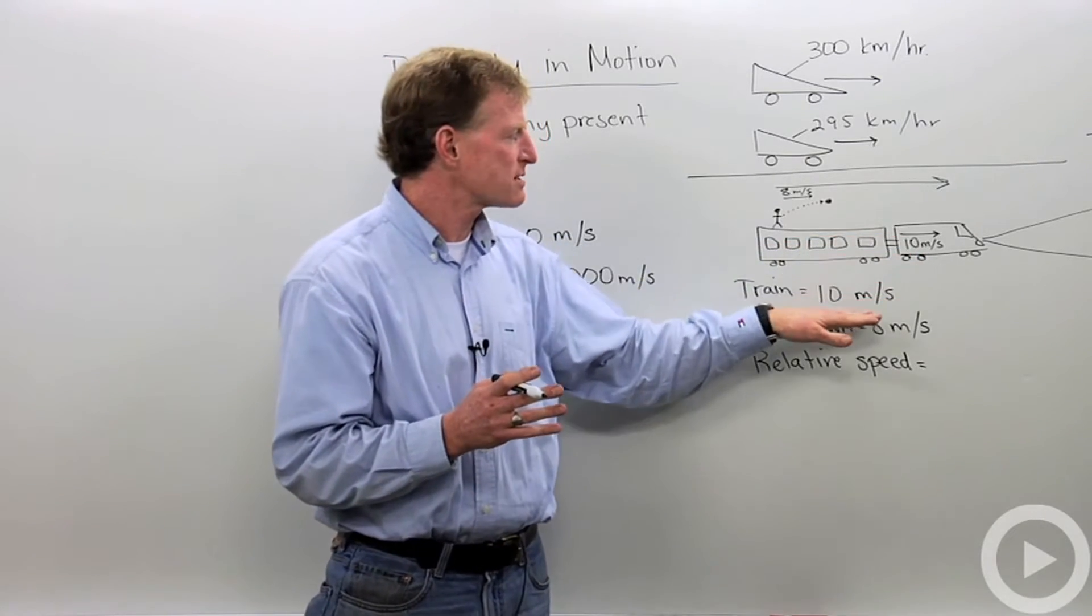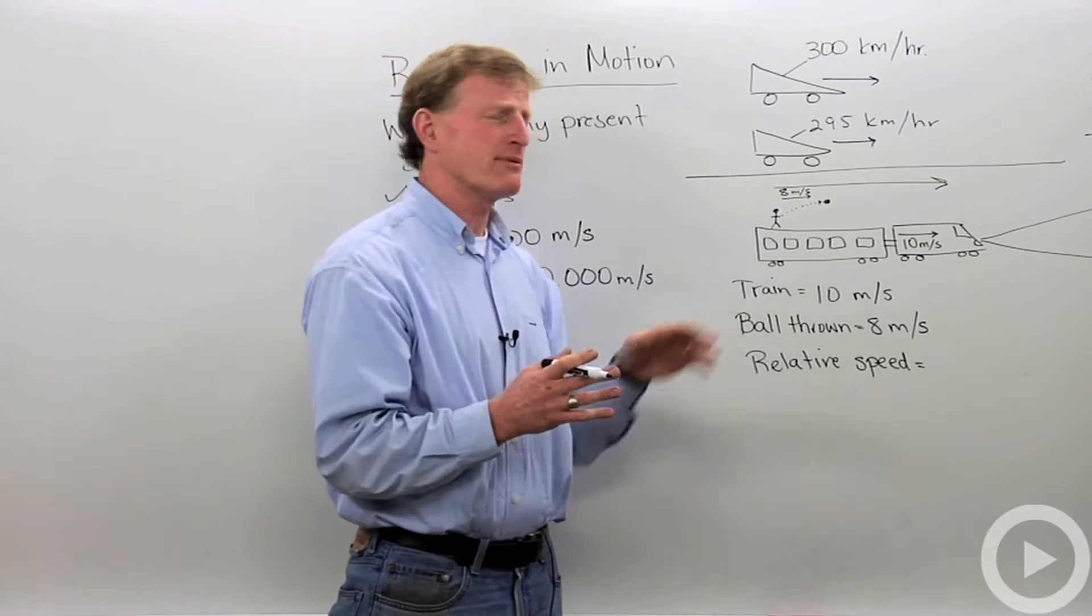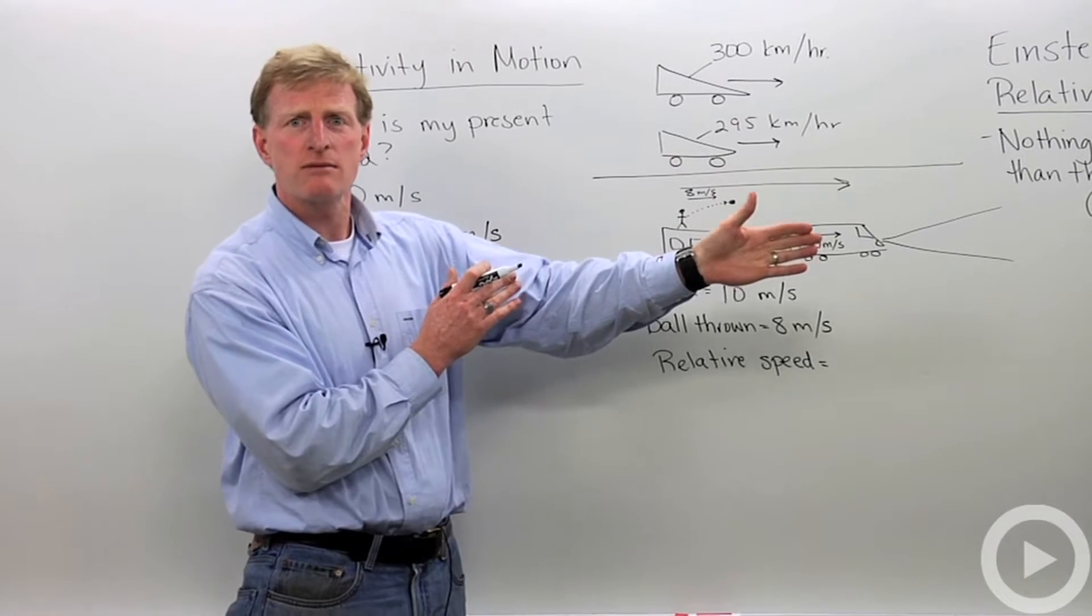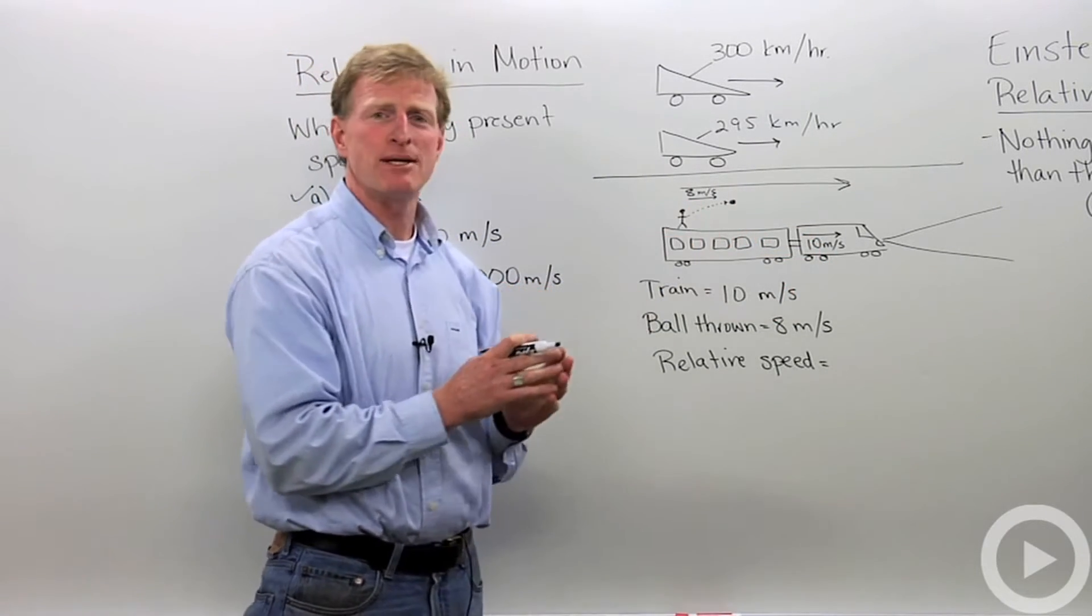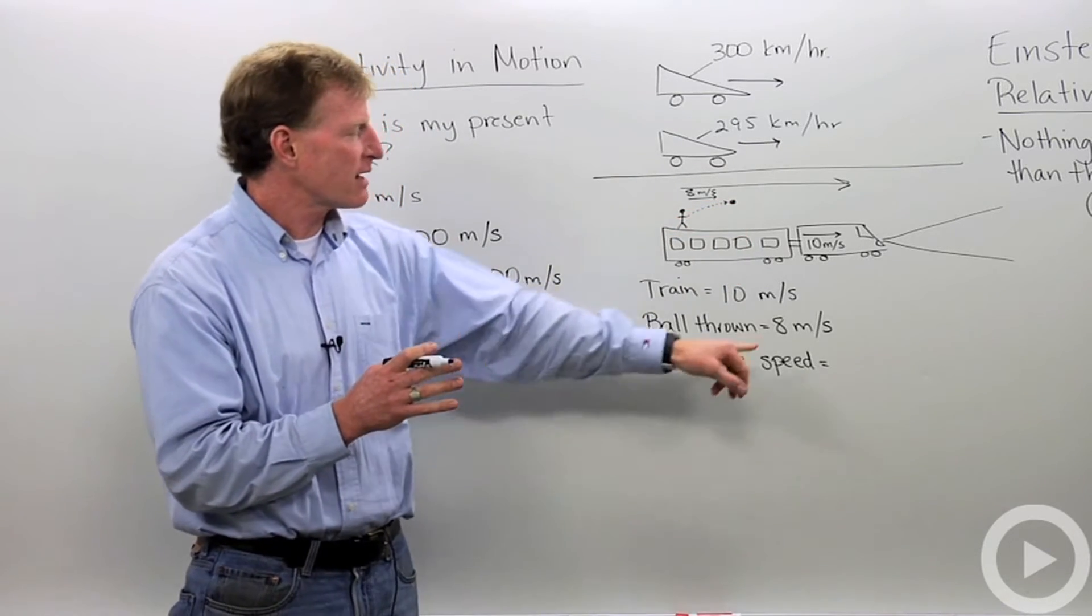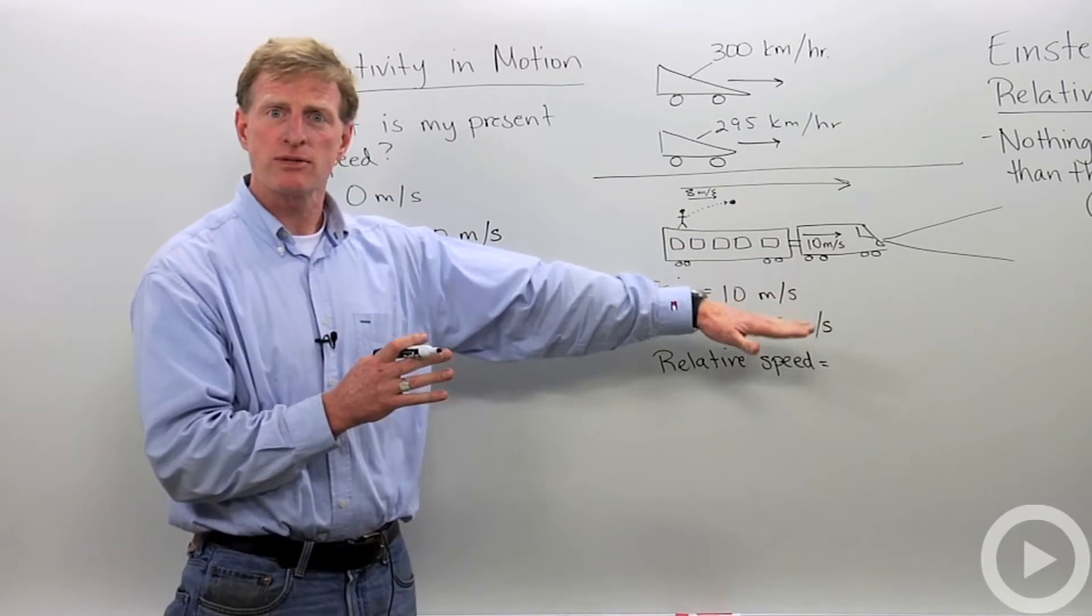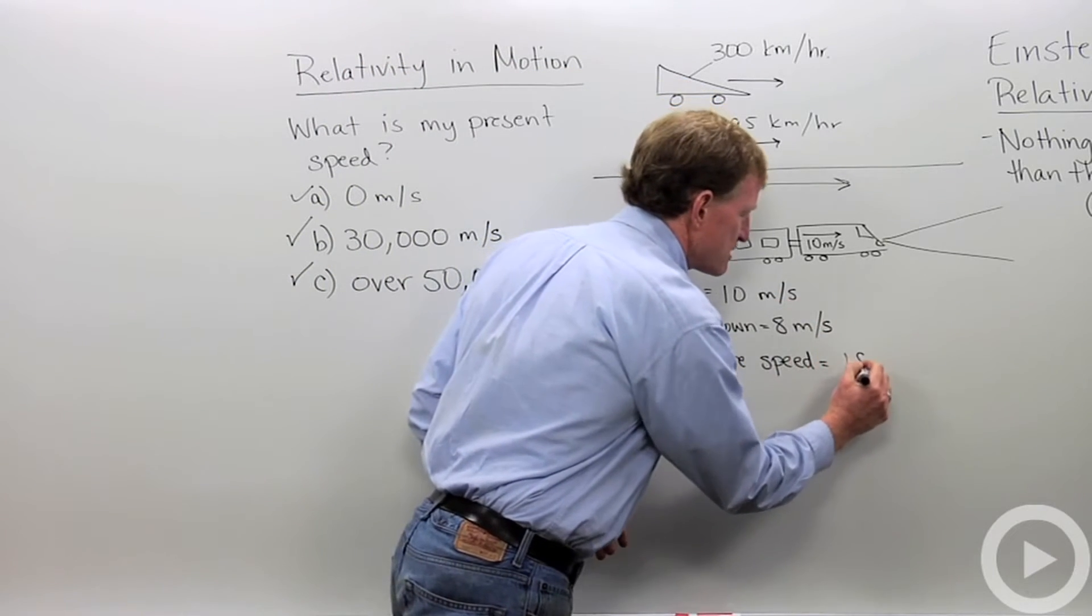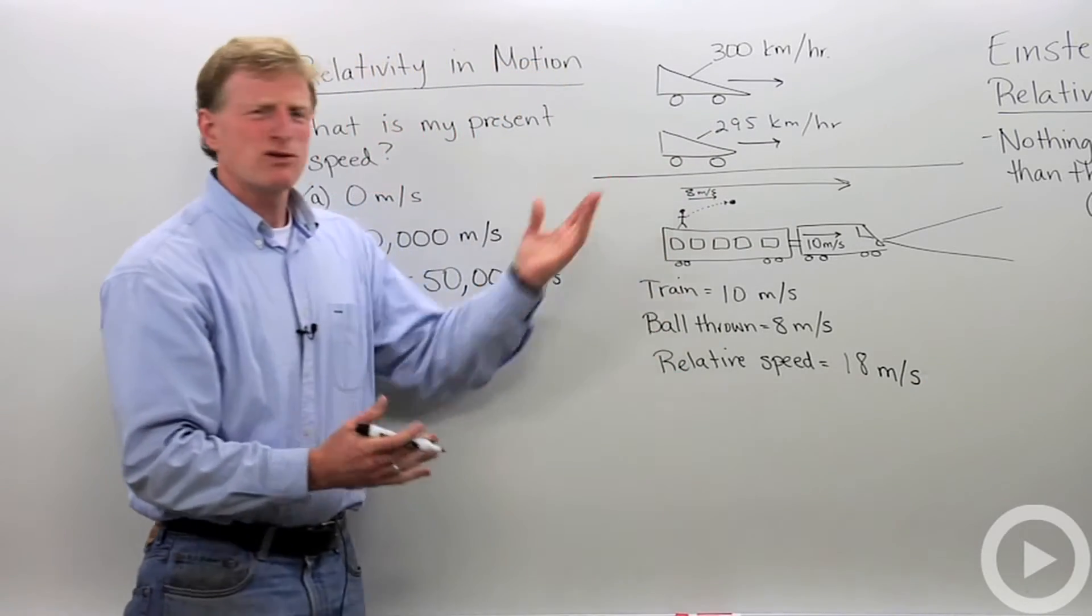Let's say I'm on a train, and that train is traveling at 10 meters per second. I am on top of that train doing a very unsafe thing. I'm throwing a football in the direction that the train is moving. Don't try this at home. I'm throwing that at 8 meters per second. Well, the ball relative to the train is moving at 8 meters per second, but the ball relative to the ground or people standing on the ground watching is 10 plus 8, 18 meters per second. So that makes sense.